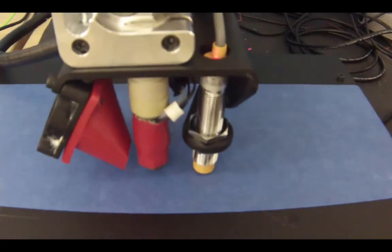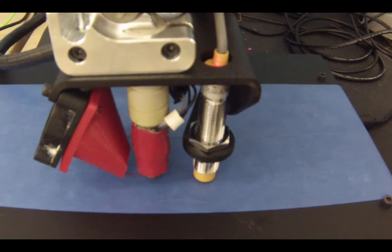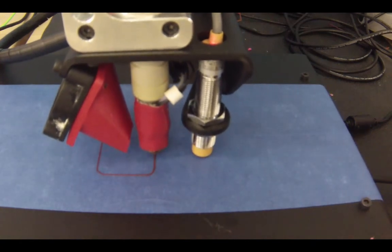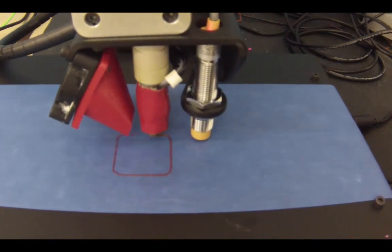After the bed is measured, the printer will do an outline of the object. This basically primes the hot end and makes sure that the filament is extruding before it starts to print the object.